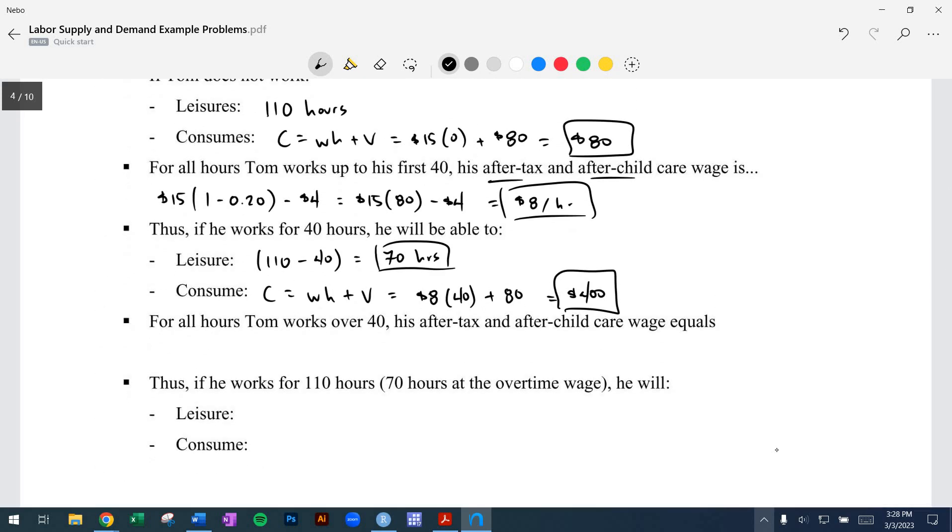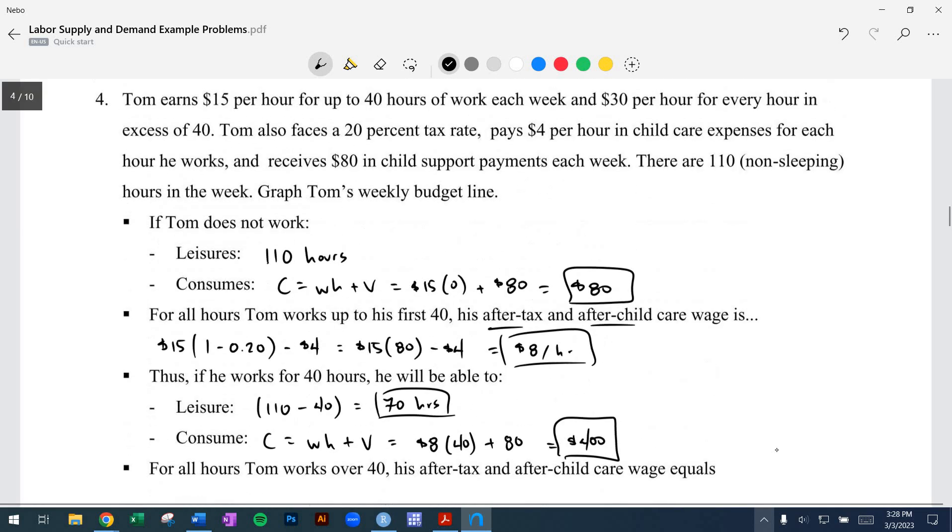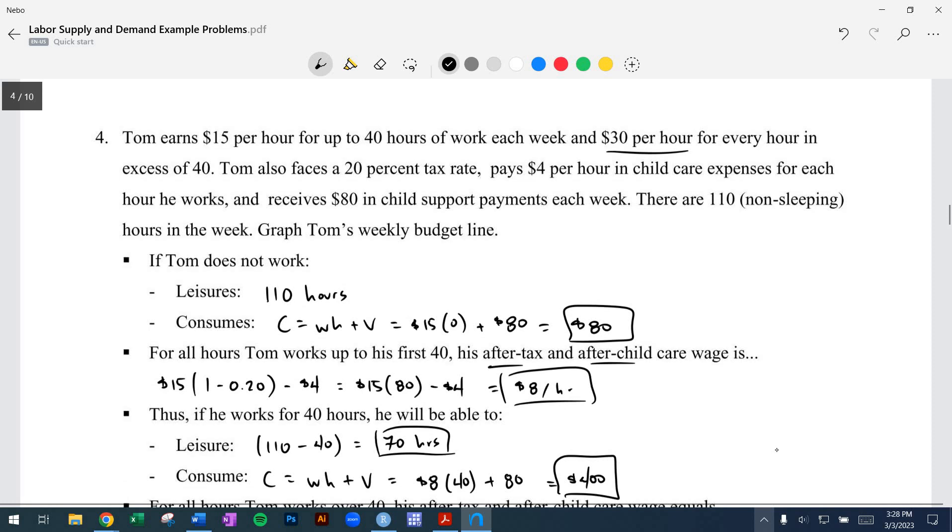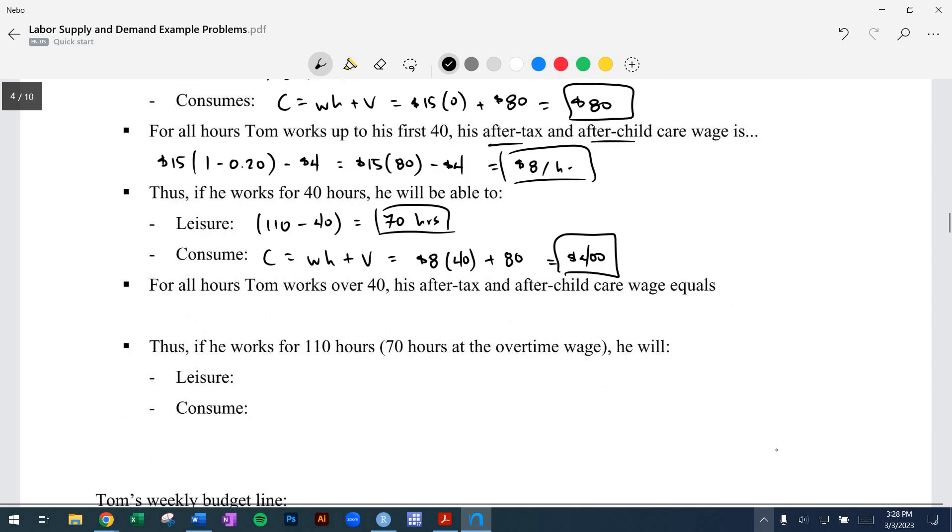Now after 40 hours, he'll have a different wage because he gets his overtime, $30 per hour. But again, he's going to be taxed at 20%, so he keeps 80%. So we have the $30 per hour times the 80% that he keeps minus $4 of childcare expenses. That's going to come out to $20 per hour.